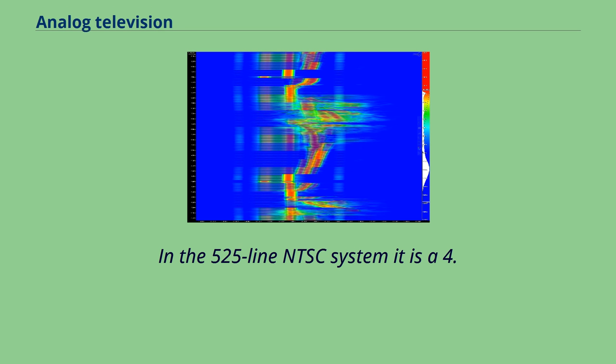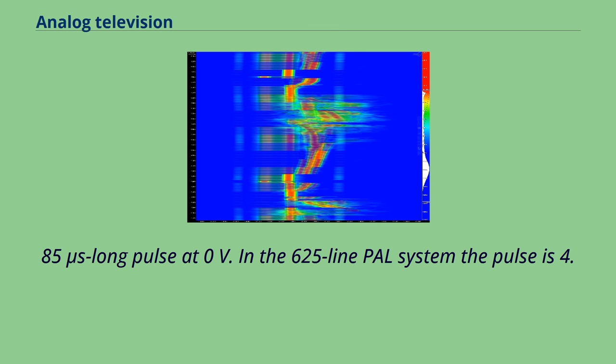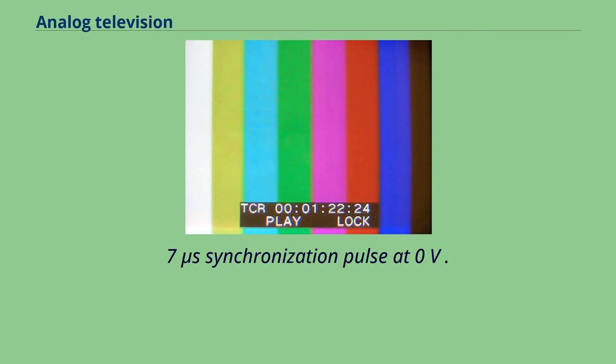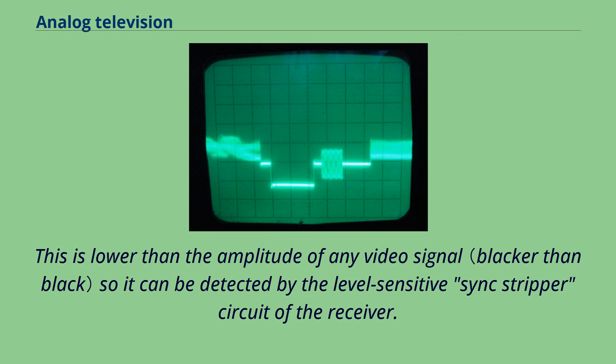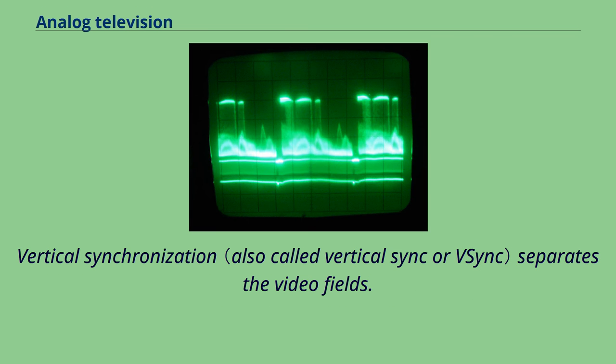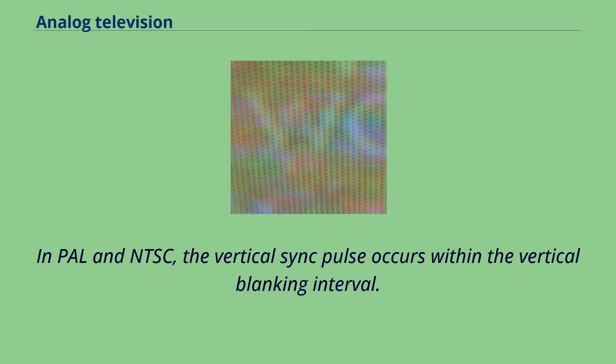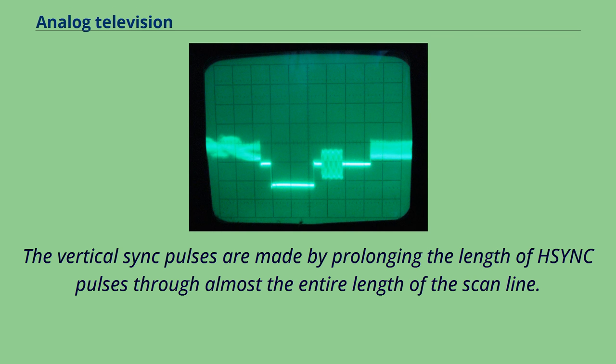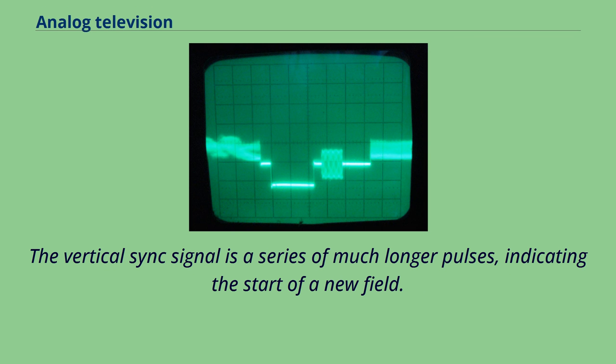Vertical synchronization separates the video fields. In PAL and NTSC, the vertical sync pulse occurs within the vertical blanking interval. The vertical sync pulses are made by prolonging the length of sync pulses through almost the entire length of the scan line. The vertical sync signal is a series of much longer pulses, indicating the start of a new field. The sync pulses occupy the whole line interval of a number of lines at the beginning and end of a scan. The pulse sequence is designed to allow horizontal sync to continue during vertical retrace. It also indicates whether each field represents even or odd lines in interlaced systems.